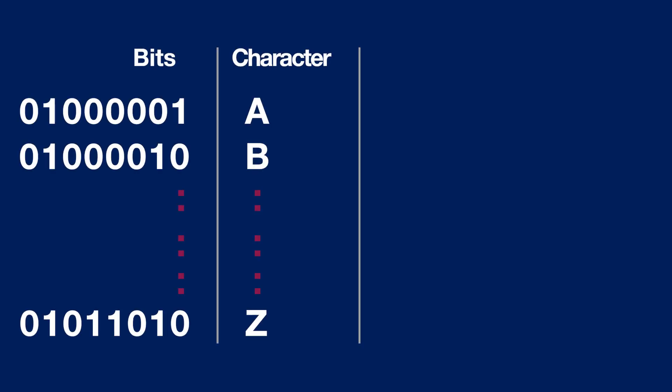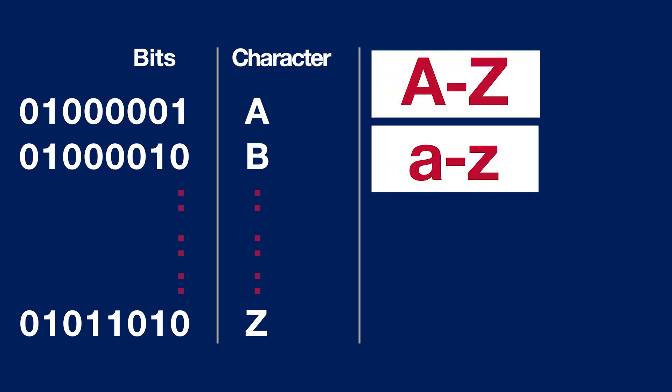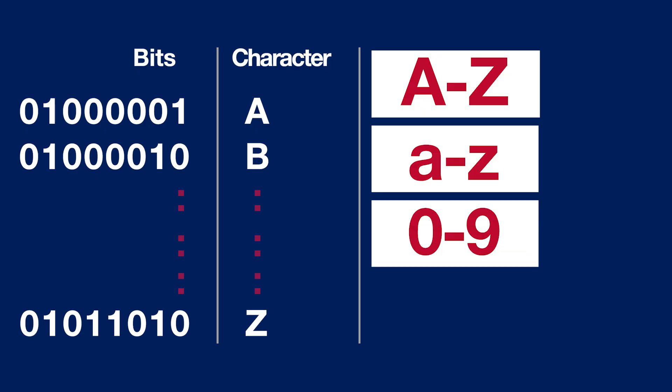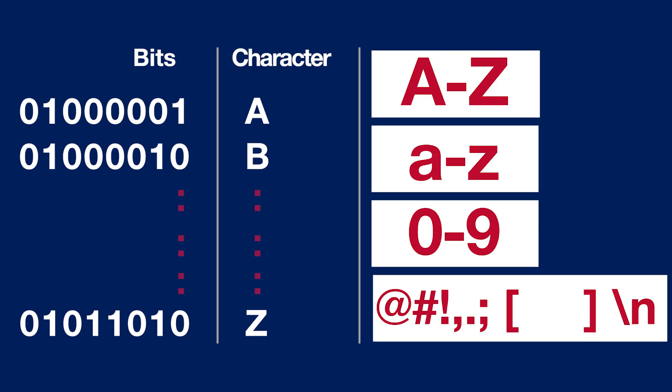ASCII specifies a table translating 95 human-readable characters. It includes the letters A through Z, both in upper and lower case, the numbers 0 through 9, with a handful of punctuation marks and control characters like space or a new line.